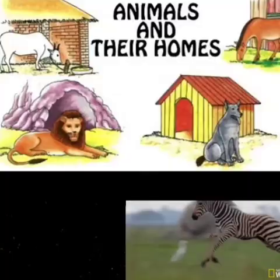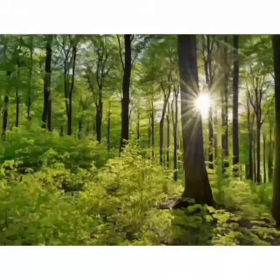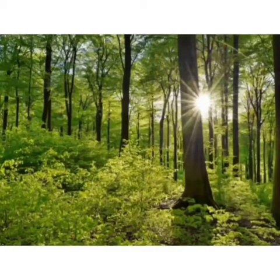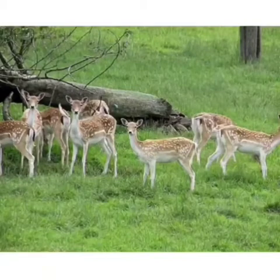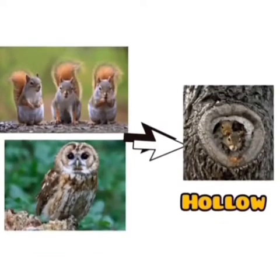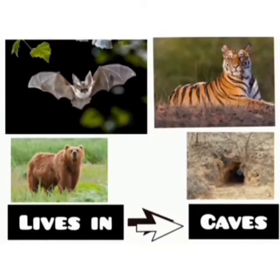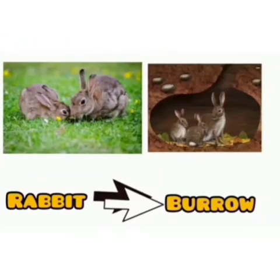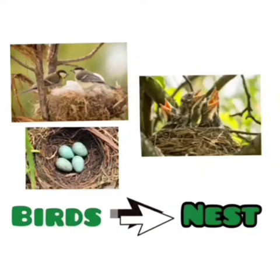So, children, let us learn about animals and their homes. A forest is a large area covered mainly with trees and plants, and is home to many animals. Giraffes, deer, and rhinoceros live in the open in the forest. Squirrels and owls live in hollow trees. Bats, tigers, and bears live in caves. Rabbits live in a burrow. Bees make a beehive.